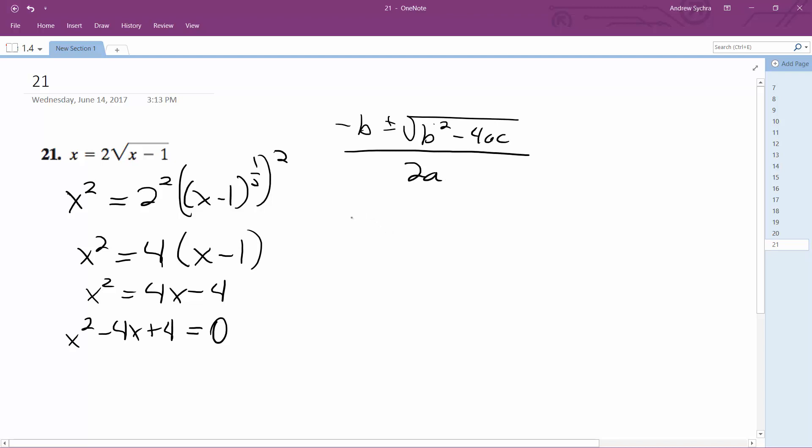And then a is equal to 1, b is equal to negative 4, c is equal to 4. Opposite of b, so 4 plus or minus square root of 16 minus 4 times a times c. Oh hey, that works out nice. Over 2. So it's just 2.